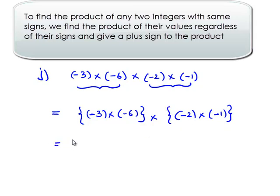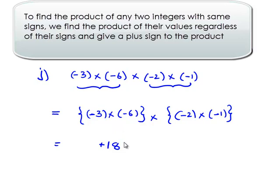To find the product of negative 3 and negative 6, first we multiply their values regardless of their signs. That is 3 into 6 gives 18. When we multiply two similar signs, we always get a positive sign — that is equal to plus 18.